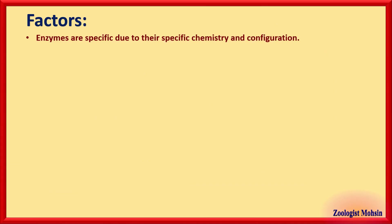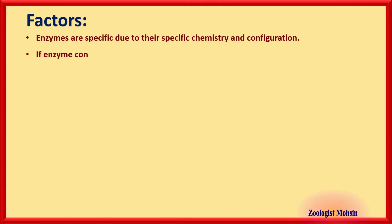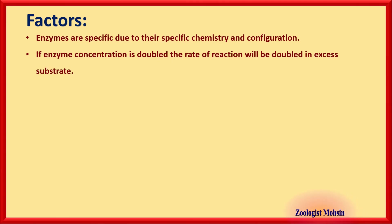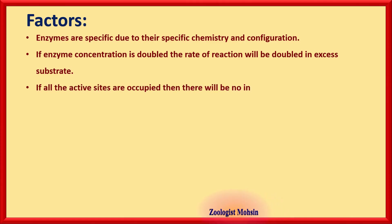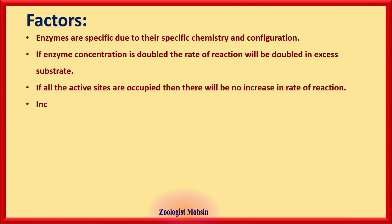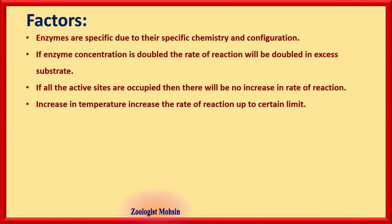Enzymes are specific due to their specific chemistry and configuration. If enzyme concentration is doubled in conditions of excess substrate, the rate of reaction will double. However, if all active sites are occupied, increasing enzyme concentration will not increase the rate of reaction further, since it is the active sites that participate in the reaction.